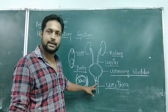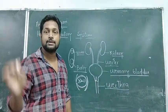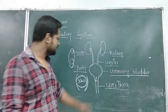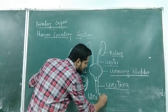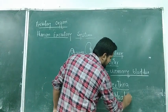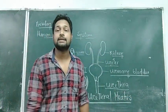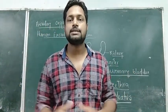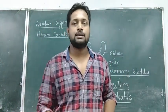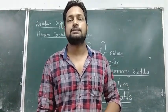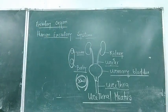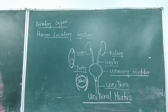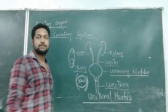Last thing: the penis has an external opening. The external opening is called the urethral meatus. The urethra originates from the urinary bladder, passes through the penis to its external opening. The external opening is called the urethral meatus.